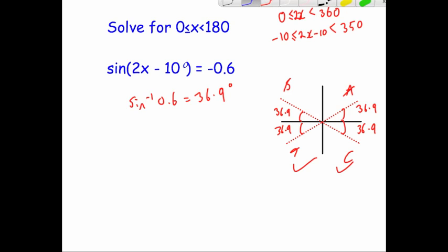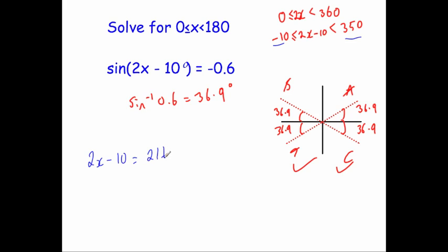So let's find our solutions. We need to go between negative 10 and 350. Starting at negative 10 and going clockwise 10 degrees, we won't reach 36.9, so that one won't work. Going back to zero and around 350 degrees, we go to the T quadrant. This solution will be 180 plus 36.9, so 2x minus 10 equals 216.9 degrees.